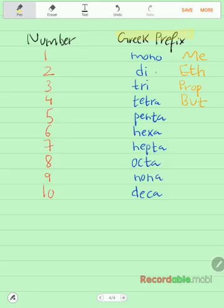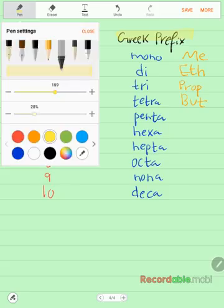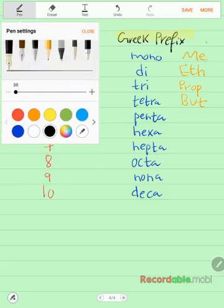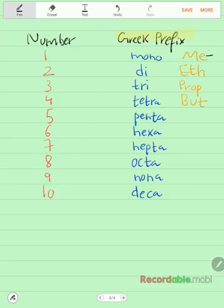So for one it is mono, for two it's di, for three it's tri, for four it's tetra, for five it's penta, six is hexa, seven is hepta, eight is octa, nine is nona, and ten is deca. I'm not sure if it's the perfect pronunciation, but anyways, you get me guys.